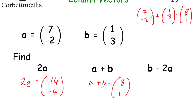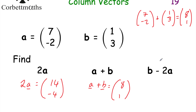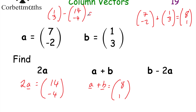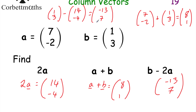Our next one says to work out b subtract 2a. We know 2a is (14, -4). We're going to do b, which is (1, 3), subtract 2a which is (14, -4). So 1 take away 14 is minus 13. And 3 subtract minus 4 — well, 3 minus minus 4 means we're going to do 3 plus 4 because we're subtracting a negative, and 3 plus 4 is 7. So the answer is (-13, 7).